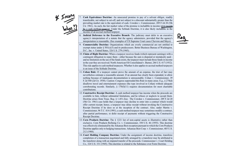The commerciality doctrine is another area where there's not one specific question from the five questions. It deals with tax-exempt organizations. Organizations which are overly commercial are not entitled to exempt status under Section 501(c)(3). This is from the Better Business Bureau case. The claim of right doctrine is a 'when' question. When a taxpayer receives funds which represent earnings with a contingent obligation to repay them — either because the sum is disputed or mistakenly paid — and no limitation on the use of funds exists, the taxpayer must include those funds in income in the year they are received. This is from North American Oil Consolidated v. Burnett. This rule applies to a cash method taxpayer; whether it also applies to accrual method taxpayers is an issue under the Schlutti doctrine.